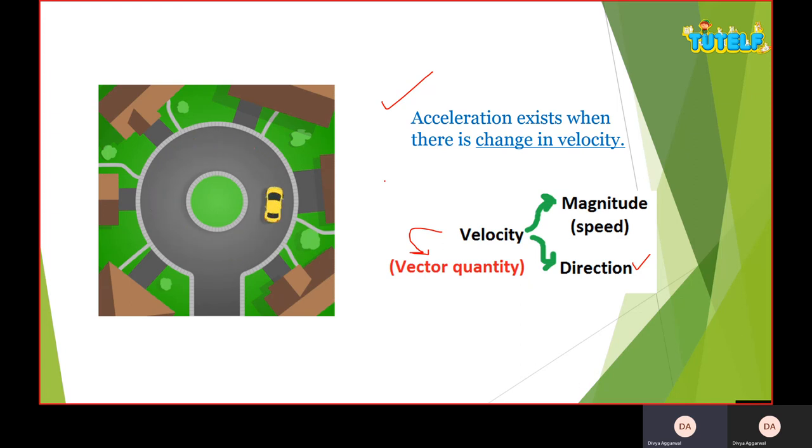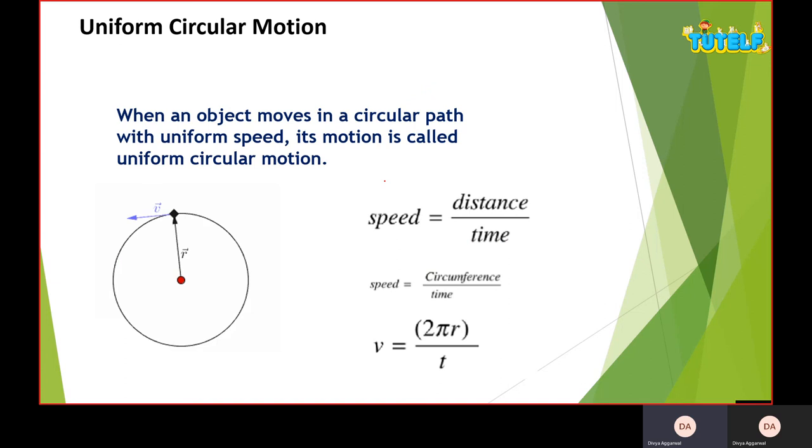This means that acceleration exists in two cases. But in uniform circular motion, my speed is not changing. My speed is constant, but it will change my direction. And if I go on a circular path with these conditions, it will be uniform circular motion.